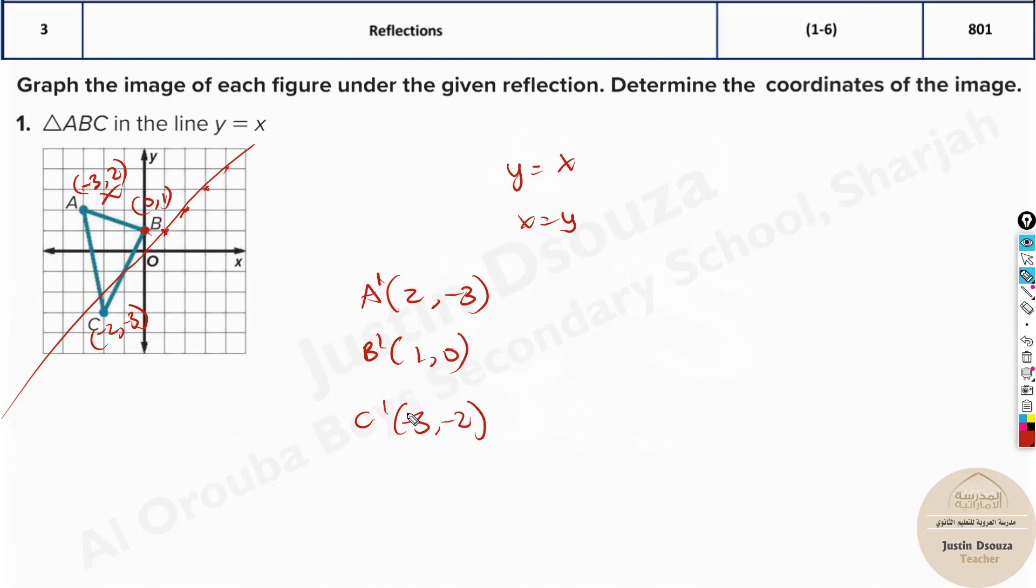Now if you're going to plot them up you get the answer. Now a prime, where is a prime? A is over here. A prime will be x is 2, 1, 2, minus 3, 1, 2, 3. This will be the point of a prime. And then b prime will be 1, 0. This is the point. And lastly minus 3 will be 1, 2, 3, 1, 2 somewhere over here. So that will be the reflected triangle.